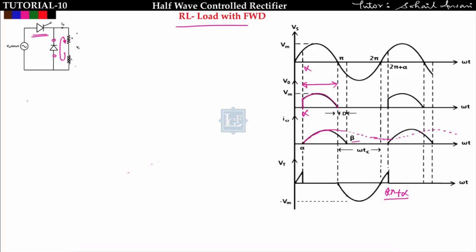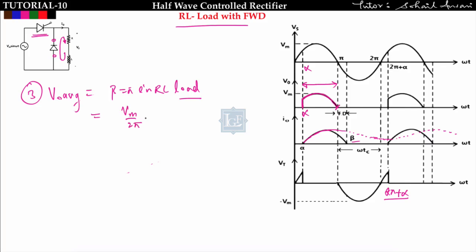To find V0 average for RL with freewheeling diode, substitute beta equals pi into the RL load formula. This gives V0_avg equals (Vm / π) × (1 + cos α). I0 average equals V0_avg divided by R. This result shows that the average output voltage is always positive for any value of alpha, which is one of the key advantages of inserting the freewheeling diode.